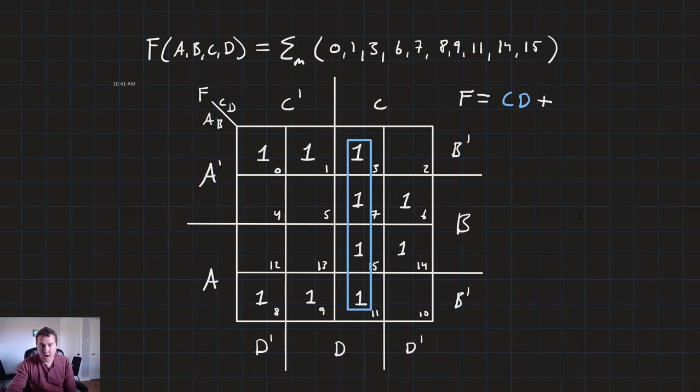Next up is a box of four that we can make right here from 6, 7, 15, and 14. So let's group those terms together. And we'll see that that fits inside the B rows and the C columns, but splits the D and the D naught and splits the A naught and the A. So we'll say that's just going to be equal to B, C.